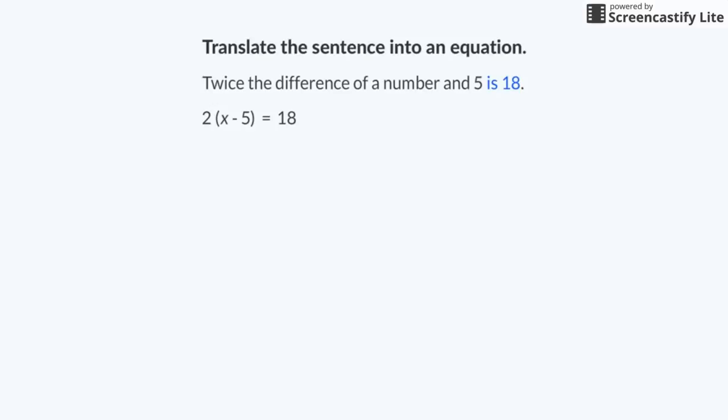I like to solve riddles using math. Here's one that I made up. My friend Eliot's age is 3 years less than 4 times his sister's age. Eliot is 17 years old. How old is his little sister? 4, 5, or 6?